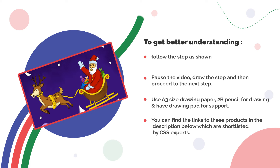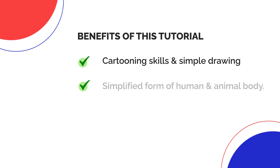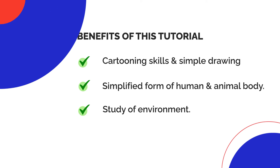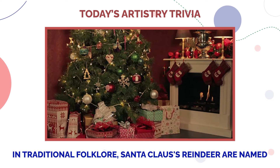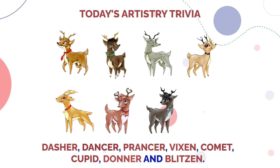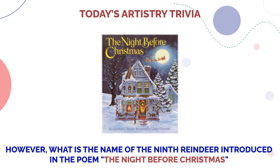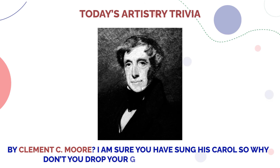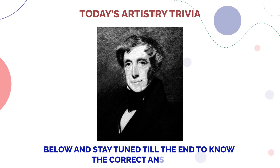This tutorial is meant to develop your cartooning skills and simple drawing — a simplified form of human and animal body study of environment. For today's artistry trivia: in traditional folklore, Santa Claus's reindeer are named Dasher, Dancer, Prancer, Vixen, Comet, Cupid, Donner, and Blitzen. However, what is the name of the ninth reindeer introduced in the poem 'The Night Before Christmas' by Clement C. Moore? Drop your guesses in the comments below and stay tuned till the end to know the correct answer.